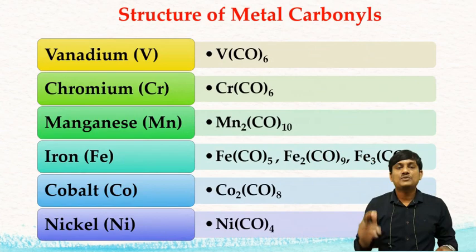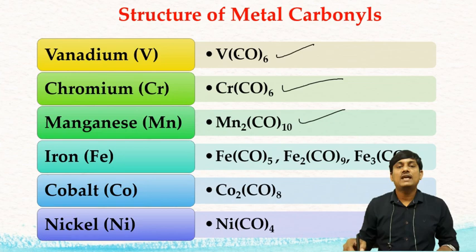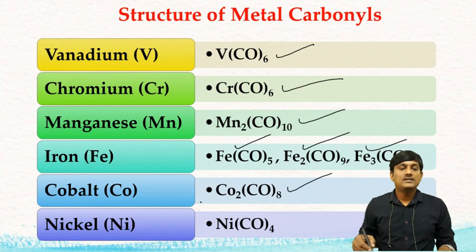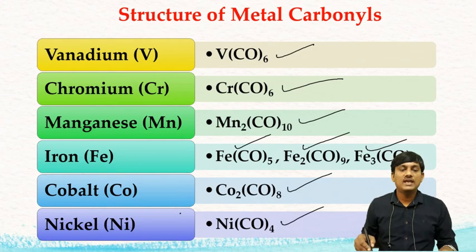Metal carbonyls include: vanadium forms V(CO)6; chromium forms Cr(CO)6; manganese forms Mn2(CO)10; iron forms Fe(CO)5, Fe2(CO)9, and Fe3(CO)12; cobalt forms Co2(CO)8; and nickel forms Ni(CO)4. Some are mononuclear metal carbonyls and some are polynuclear metal carbonyls.